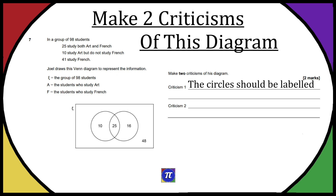The second criticism is if you add up all the numbers — the 10, 25, 16, and 48 — they add to 99, not 98. They're meant to add to 98 because he's put the group of 98 students, and we were told that at the start as well.